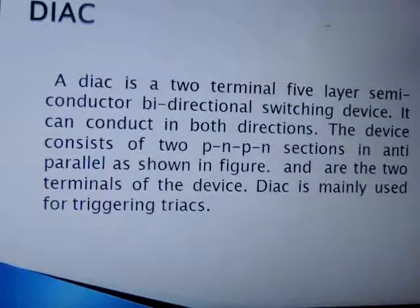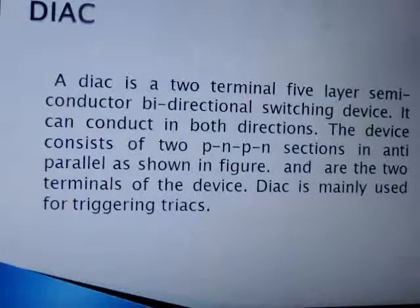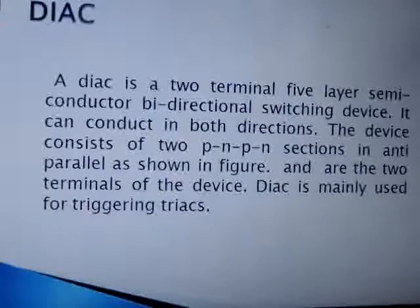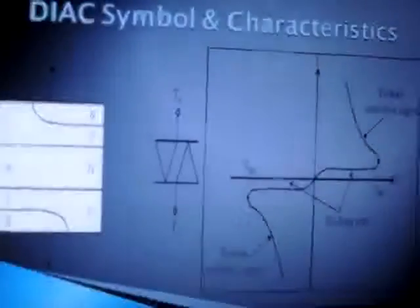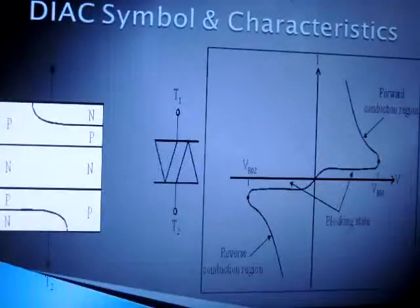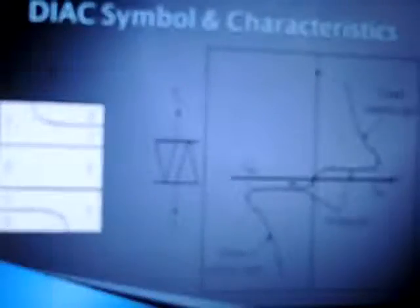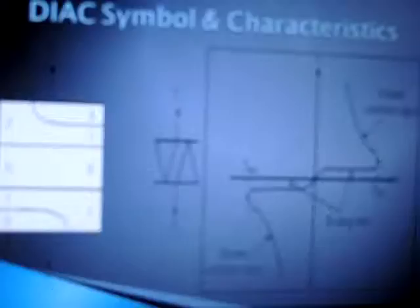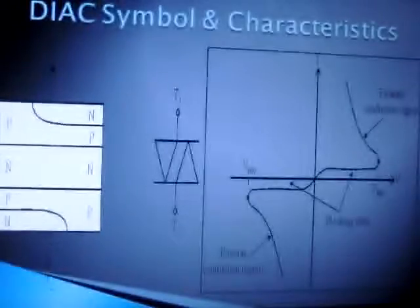A DIAC is basically used to make the firing circuit of a TRIAC. Symbolically, it can be understood as two diodes connected in anti-parallel, making it a bi-directional switch. This is the block diagram, symbol, and VI characteristics of a DIAC. In both forward and reverse direction, it turns on after approximately 0.7 to 1 volt typically.